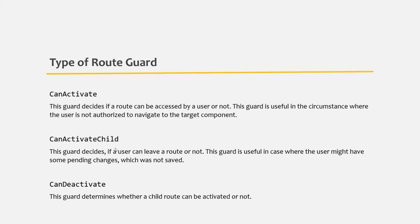Then we have the CanDeactivate route guard. You can use CanDeactivate on a route if you want to control when a user can navigate away from the current route. For example, if a user has edited his details but tries to navigate away before saving, we will inform the user of unsaved changes. If the user confirms, we allow navigation away; otherwise, we keep the user on the same route and cancel the navigation. This can be achieved using the CanDeactivate route guard.